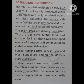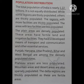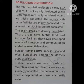The plain areas are densely populated, as these areas have fertile land and irrigation facilities. They also have developed means of transport and communication and other essential services. Punjab, Haryana, Uttar Pradesh, Bihar and West Bengal are among the densely populated states. Plateau areas are less populated. Mountain areas and desert areas are also sparsely populated. The delta regions are thickly populated, as there are fertile areas.